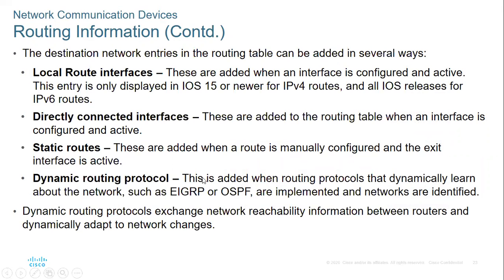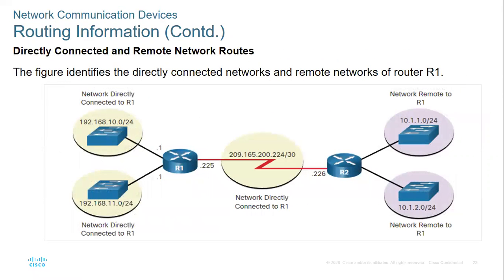With static routes, the network admin can configure routes manually. They go into global configuration mode and type the command 'IP route' followed by the network address — for example, 10.1.1.0 — and the subnet mask 255.255.255.0, then specify either the exit interface or the next-hop address when configuring static routes.